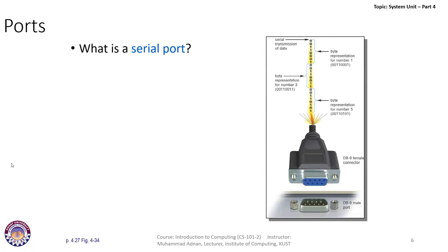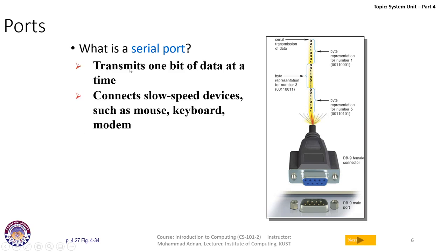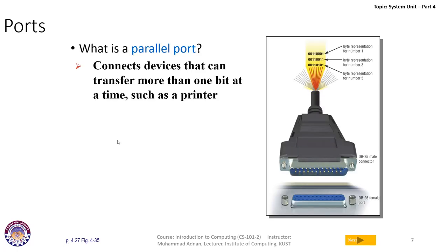A serial port transmits one bit of data at a time — that is why it is called a serial port, because data is transmitted serially. A byte representation for one number is 0011001, and one bit is transferred at one time. This is a DB9 male port with a DB9 female connector. Because it is serial, it has slower speed and is used to connect slow-speed devices such as mouse, keyboard, and modem.